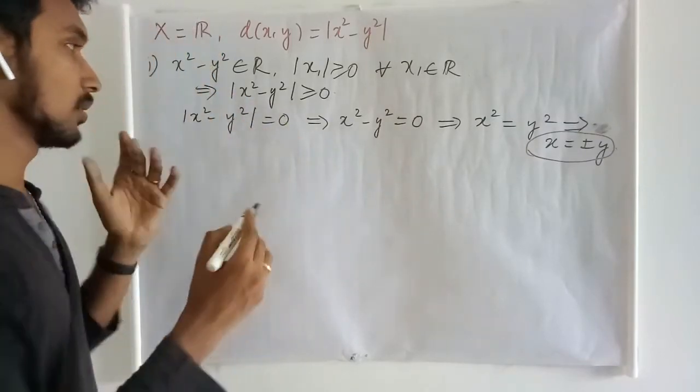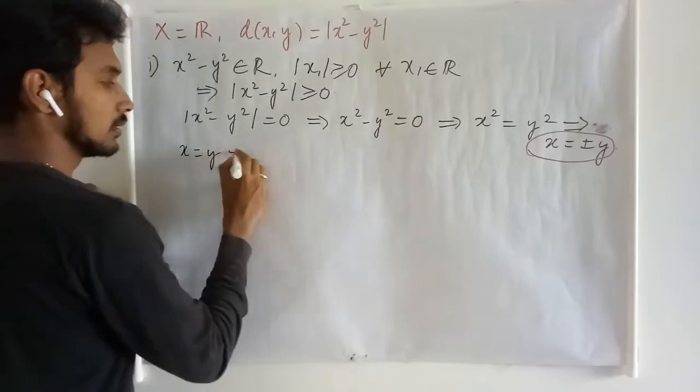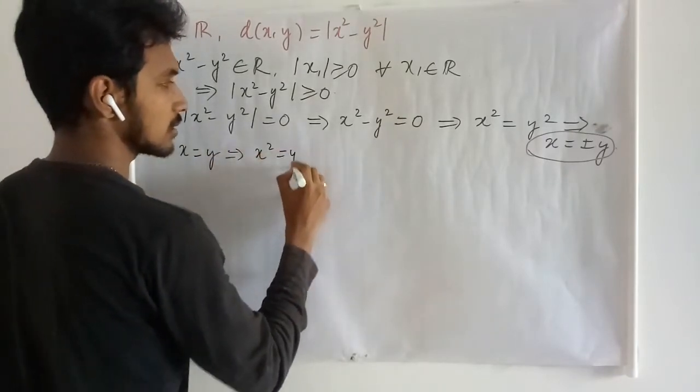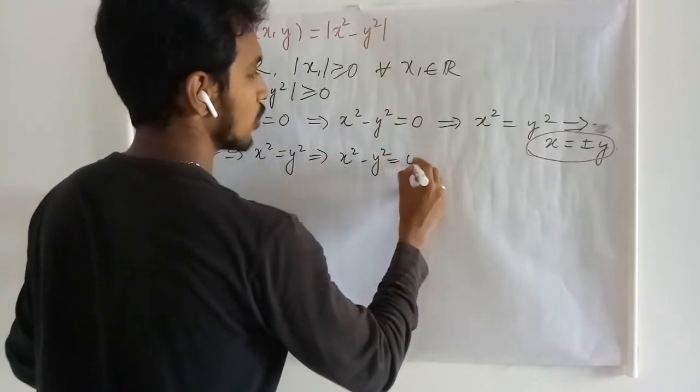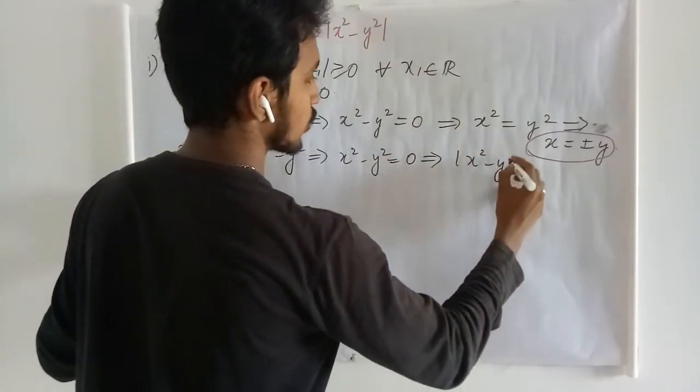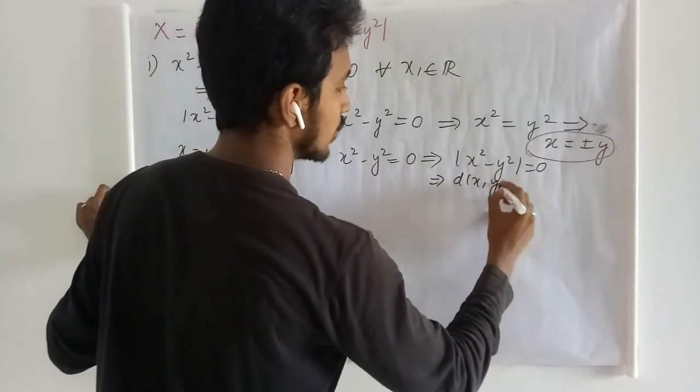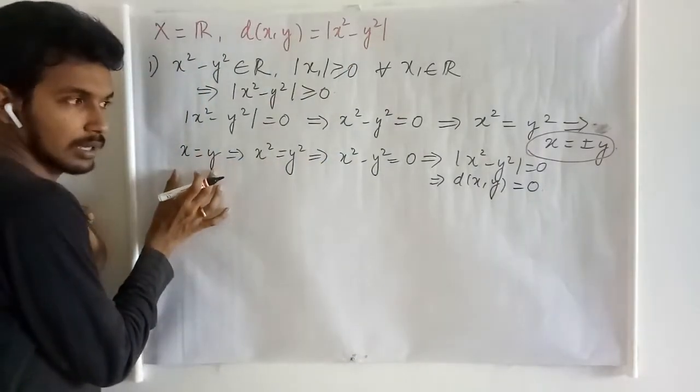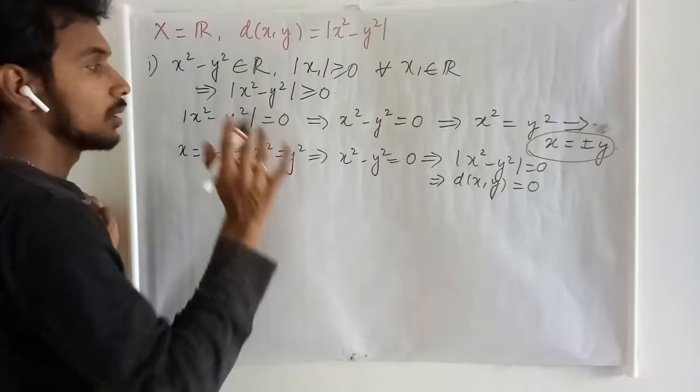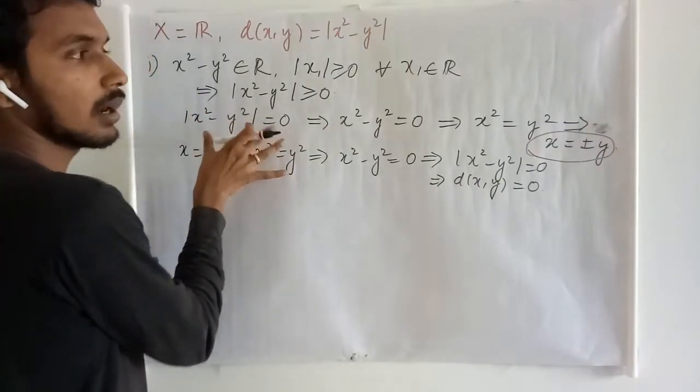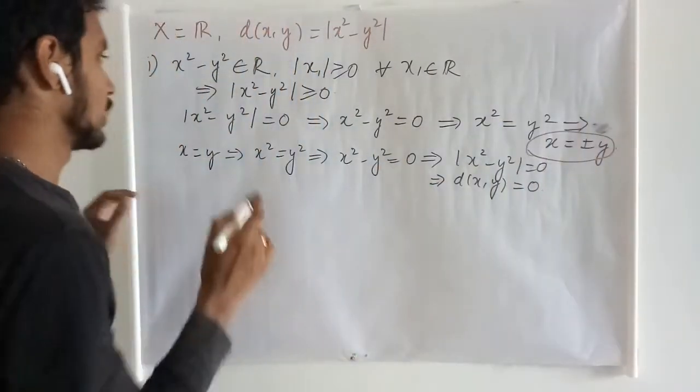Supposing x is equal to y, this gives me that x squared is the same as y squared, and this gives me x squared minus y squared is zero, and this gives me absolute of x squared minus y squared is zero. That is, d of x comma y is zero. If we take x and y are the same, then we get the metric to be zero. But if we take the metric to be zero, we are not assured that x and y are the same. We have other possibilities as well.